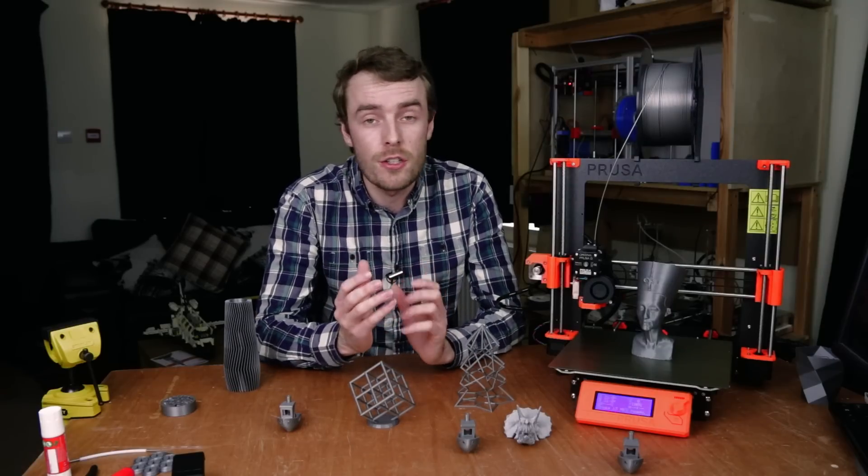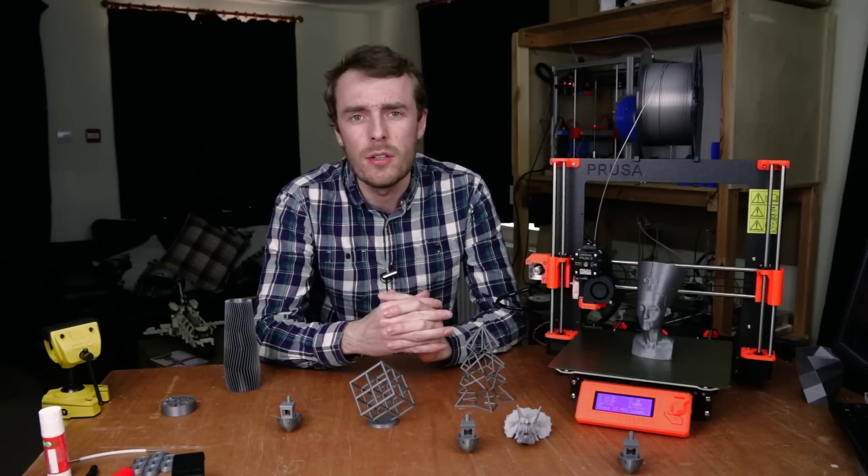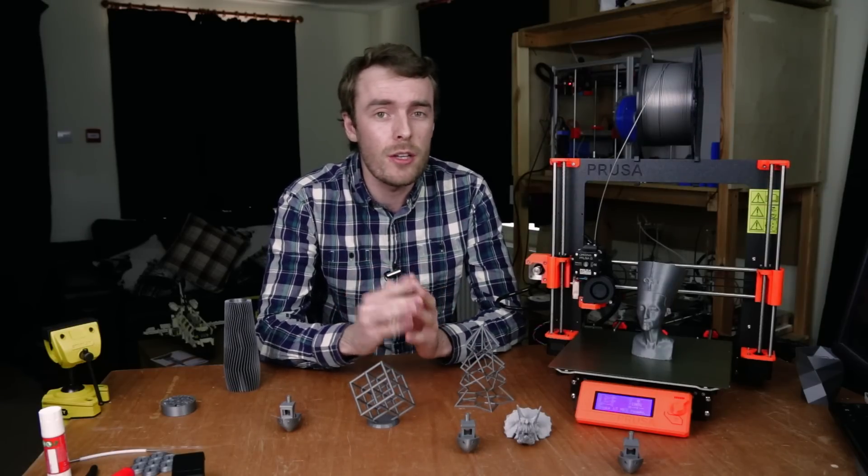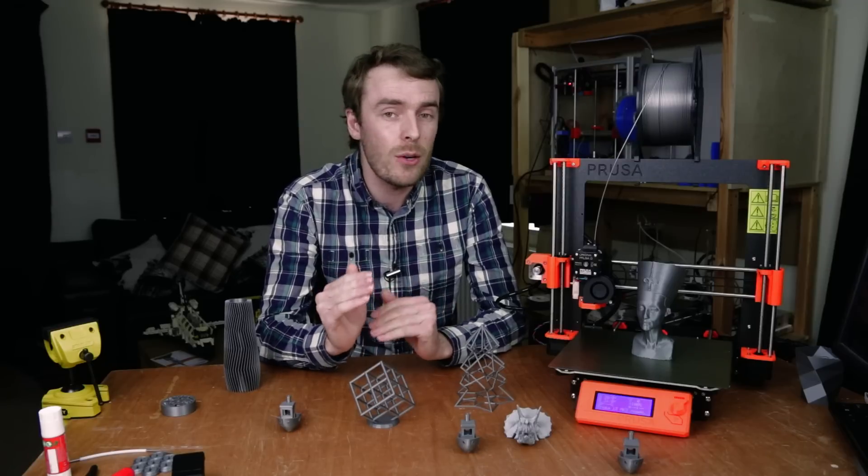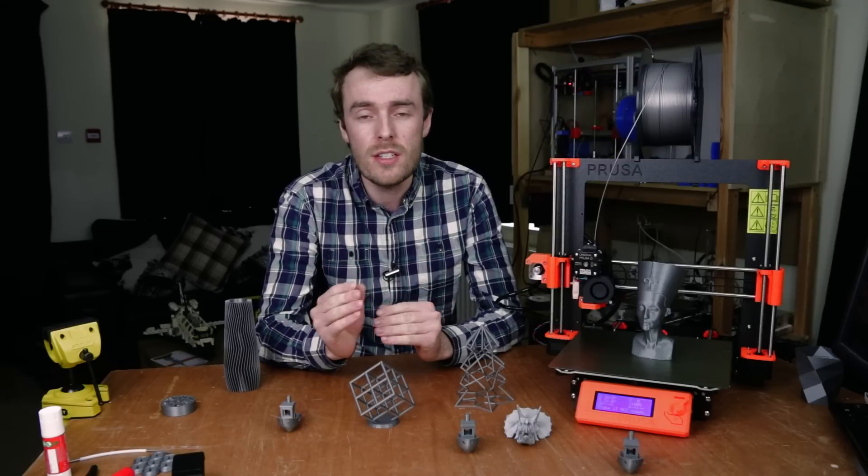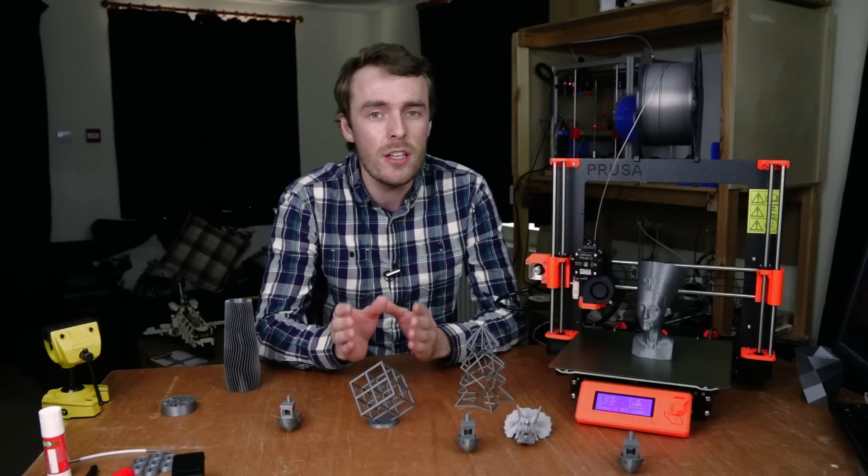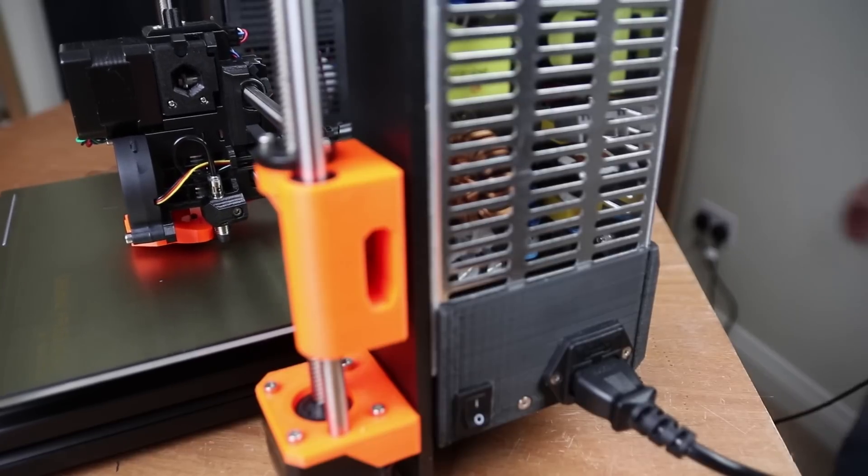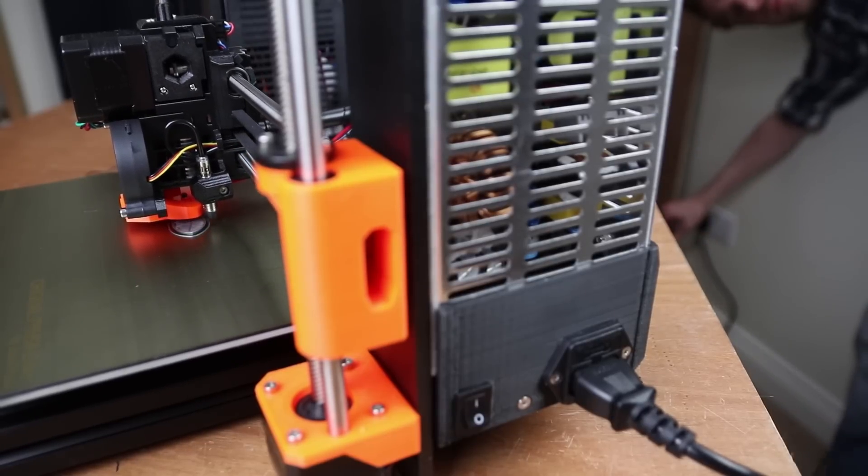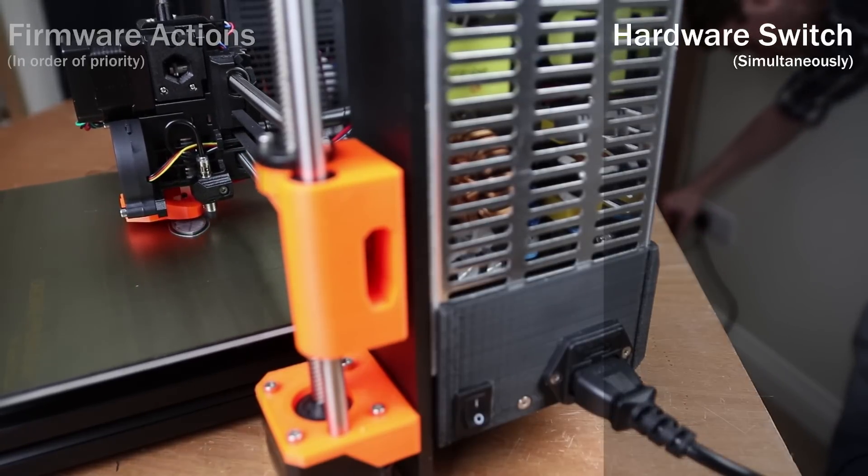When that information reaches the control board a few things happen. And remember, when the power goes down the printer doesn't know exactly how long it has. All it knows is that sometime in the near future it's going to be losing power. So it does a couple of things: a hardware switch and some actions within the firmware.